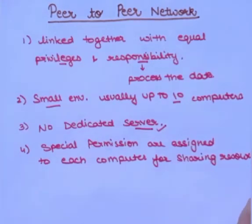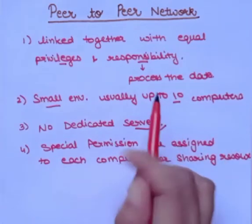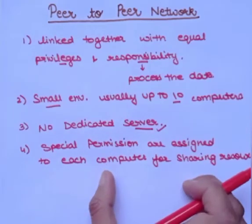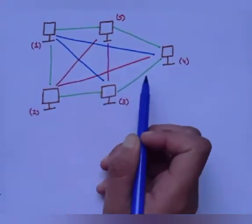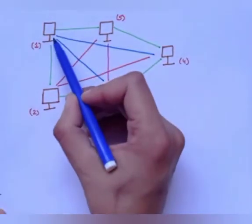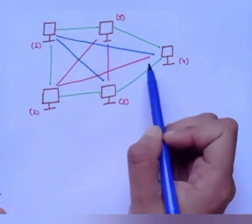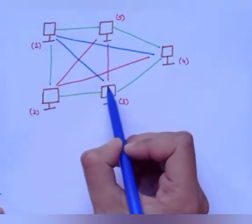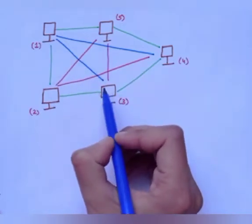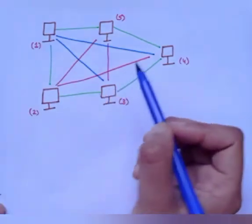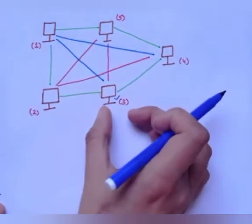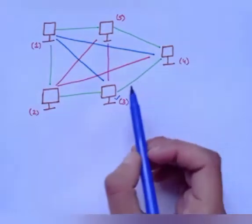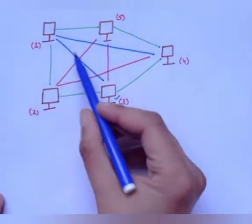This is the general diagram of a peer-to-peer computer network architecture. You can see that every computer system is connected with each and every other system. If computer number one has data to send to computer number three, then data can be transferred directly. There is no need for a centralized device, but if one system goes wrong, data can be lost with no chance to recover.